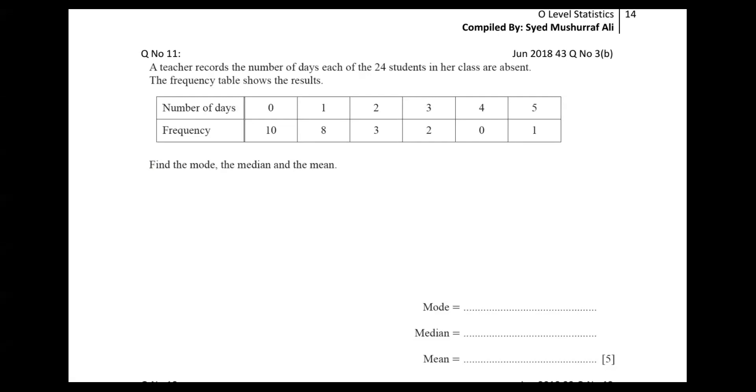You can say zero comes ten times, one comes eight times, two repeats three times, three repeats two times. So you can see that two comes three times, but similarly, the highest repeating number is zero because zero repeats ten times. So our answer is zero. Mode is very clear, the answer becomes zero. I'm writing here mode is zero.